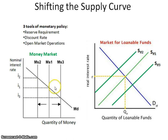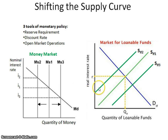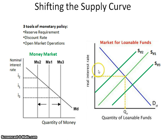If the money supply increases, the nominal interest rate goes down, and likewise the real interest rate will go down. Nominal and real interest rates move in the same direction — that's a good rule to check when working through problems. Conversely, if the Fed decreases the money supply — contractionary monetary policy — the nominal interest rate rises and the real interest rate rises as well.